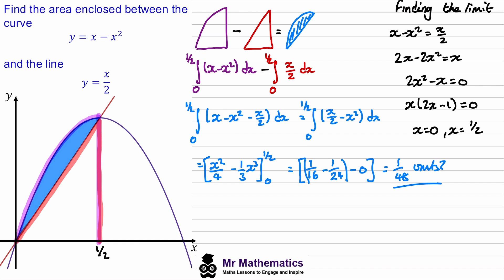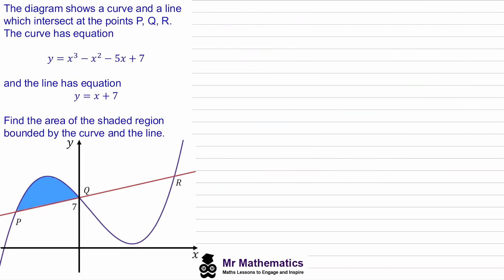Let's try one more question. In this question we're told that the diagram shows a curve and a line which intersects at the points P, Q, and R, and the curve has this equation and the line has this equation. We've been asked to find the area of the shaded region bounded by the curve and the line.